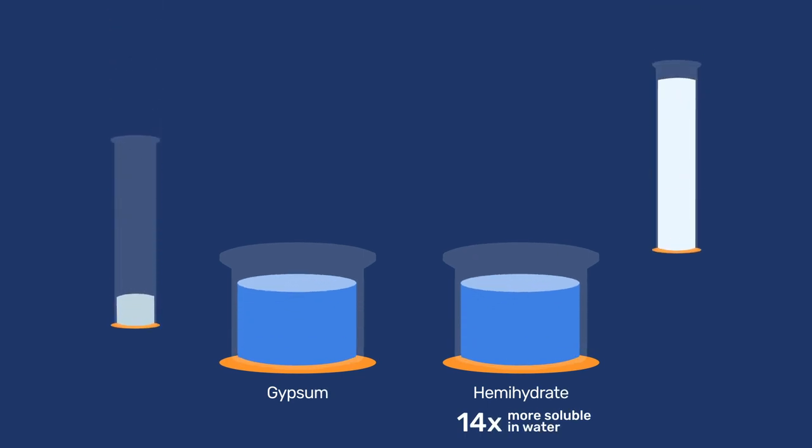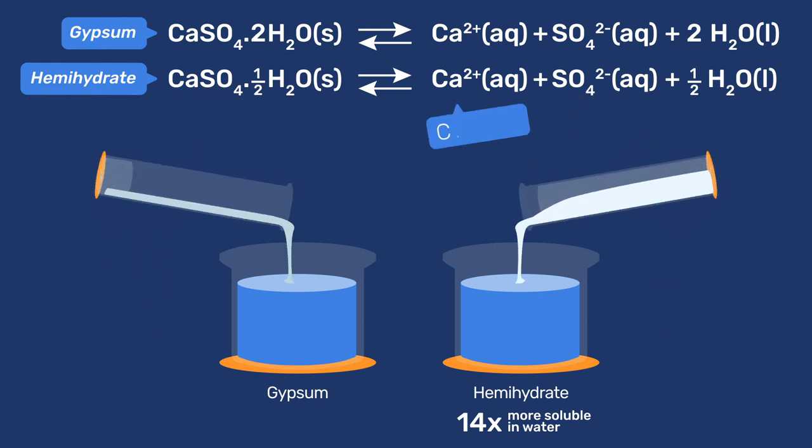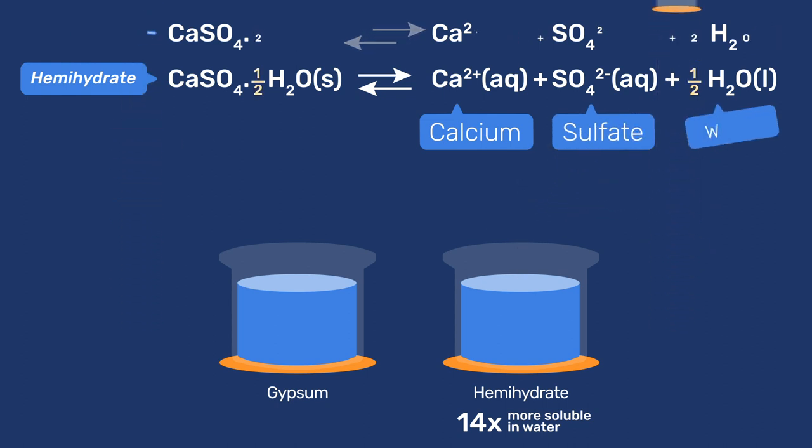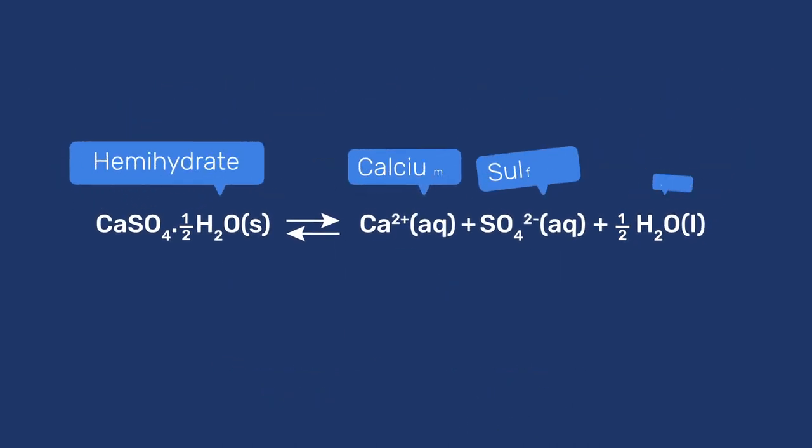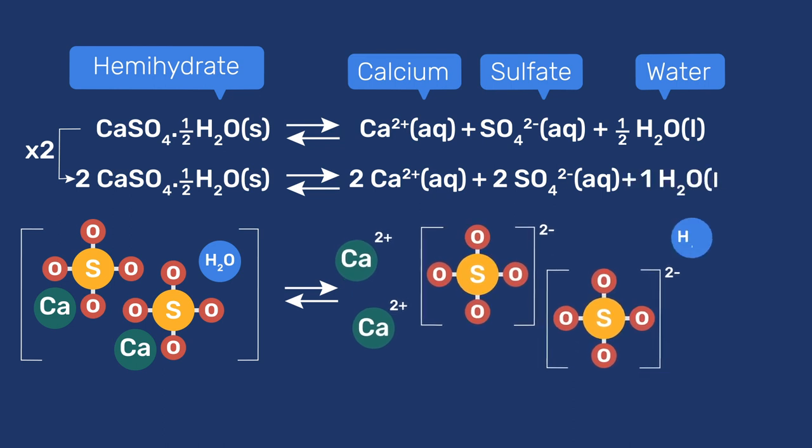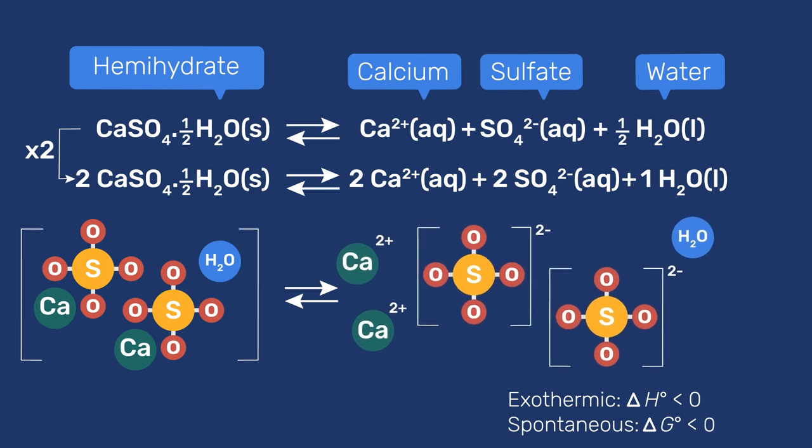Hemihydrate is 14 times more soluble in water than gypsum. When dissolving in water, hemihydrate and gypsum both release one mole of calcium and one mole of sulfates, but hemihydrate only releases half a mole of water instead of two. This reaction can also be written with integer stoichiometric coefficients by multiplying all terms by two, giving that two moles of calcium sulfate hemihydrate dissolve in water to release two moles of calcium, two moles of sulfates, and one mole of water. This reaction is both exothermic and spontaneous at ambient temperature.